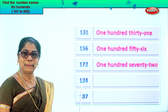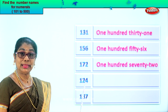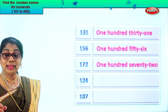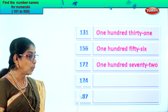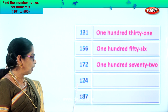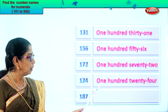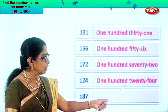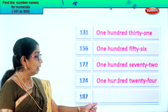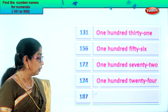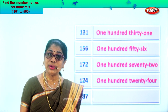Look at the next numeral. Four in the ones place, two in the tens, and one in the hundreds place. Read aloud: one hundred twenty-four. You write one hundred, then you write twenty-four. One hundred twenty-four.